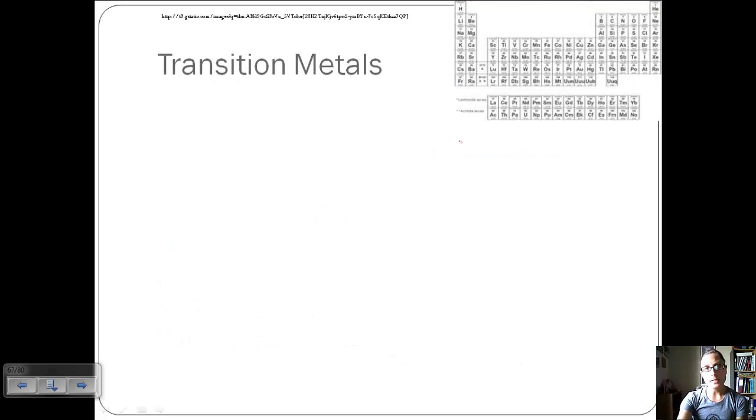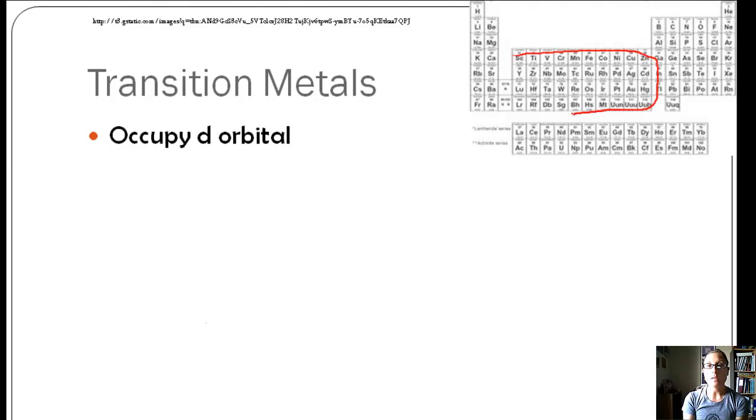Transition metals are a little bit different, and so we kind of talk about them separately. Transition metals occupy the d orbital, and so this entire box here. They tend to go out of order. First we talk about 4s, and then we go to 3d.